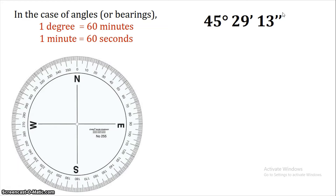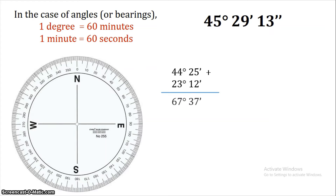We will manually add the angles in degree-minute-second format. For example, adding the second values: 5 plus 2 is 7, 2 plus 1 is 3, 4 plus 3 is 7, 4 plus 2 is 6, giving 67 degrees, 37 minutes. That is very easy to see.